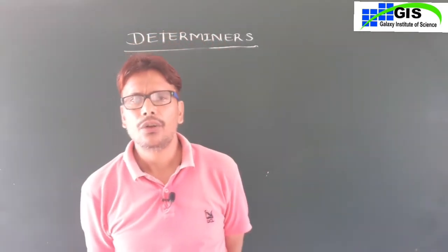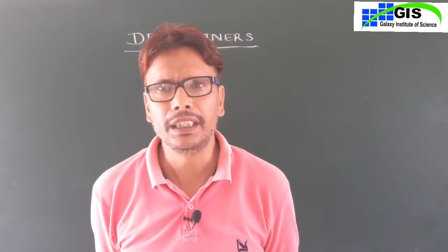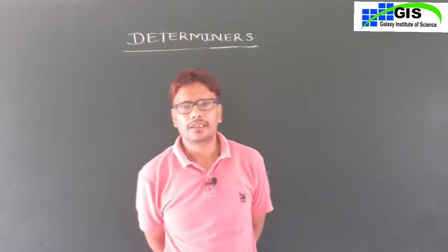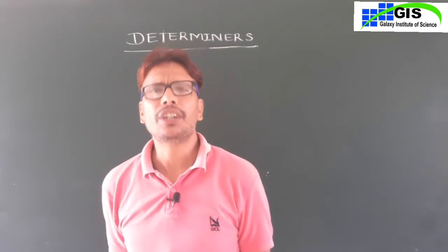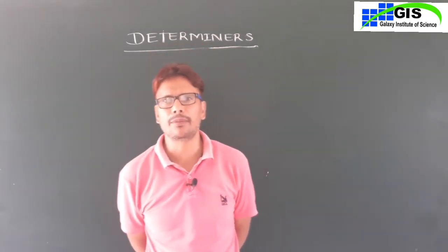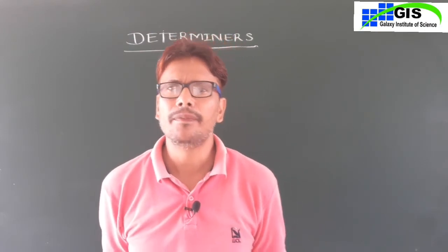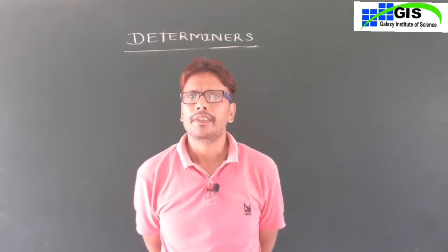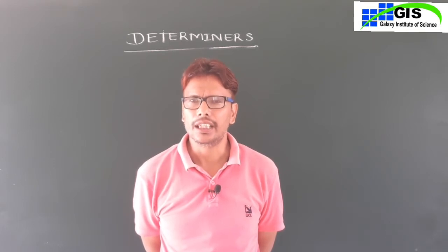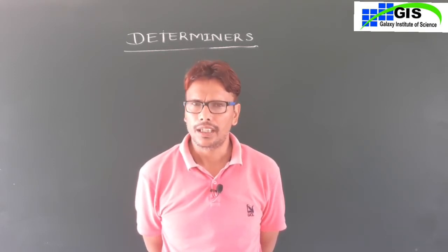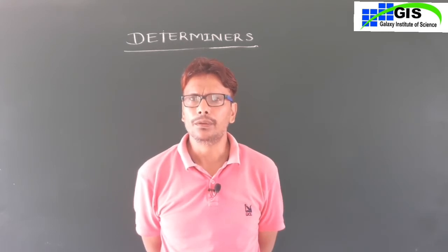The full list of determiners includes: Articles — A, An, The. Demonstrative — This, That, These, Those. Distributive — Either, Neither, Each, Every. Quantifiers — Some, Any, Much, Many, Little, A Little, The Little, Few, A Few, The Few. Possessive Determiners — My, Our, Your, His, Her, Their, Its.